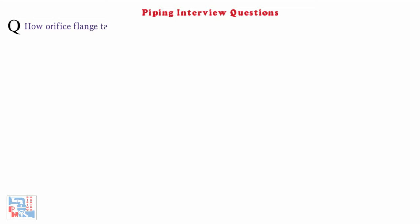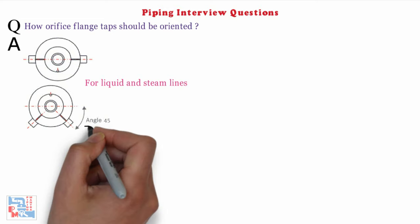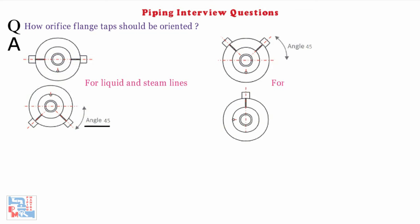How should orifice flange taps be oriented? For liquid and steam lines, it should be horizontal or 45 degrees down from horizontal on both sides. For gas and vapor lines, it should be vertical or 45 degrees to vertical on both sides, tapped at 0.5 inches.